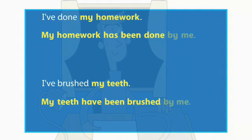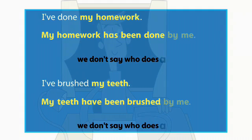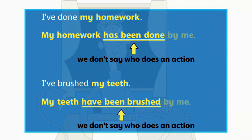We use the passive voice when we don't say who does an action. The object of an active sentence becomes the subject of a passive sentence. We can use the passive voice in the present tense, past tense, and present perfect tense.